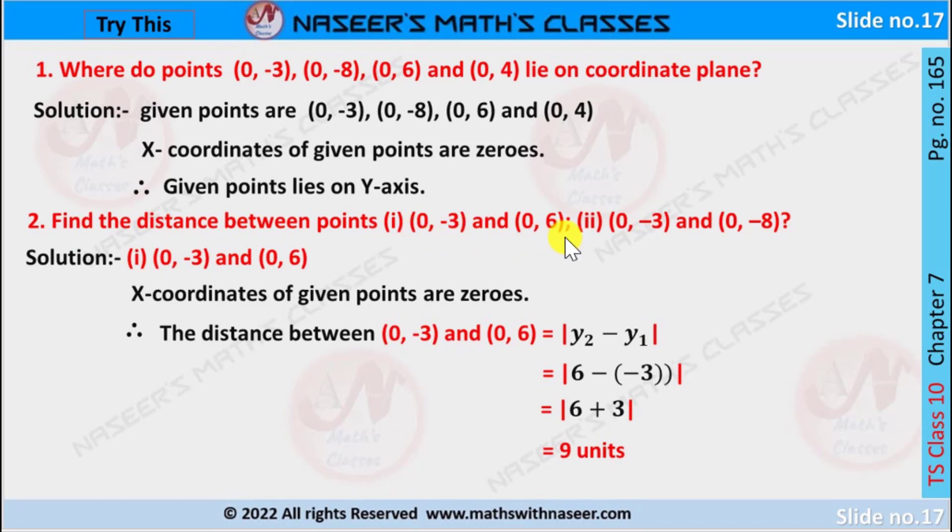-3) and (0, 6). We already know the x-coordinates of these points are 0. Then the distance between (0, -3) and (0, 6) is given by |y₂ - y₁|. Here y₂ is 6 and y₁ is -3. Then we substitute these values. It can be written as |6 - (-3)|. Here minus into minus becomes plus, then it can be plus 3.